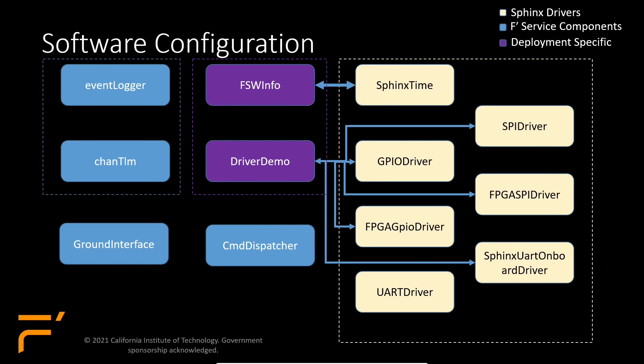Flight Software Info is connected to the Sphinx time driver because it has commands to update time on the Sphinx. Driver Demo is connected to the Sphinx drivers. Flight Software Info and Driver Demo generate both events and telemetry, which get passed to the event logger and channel telemetry components respectively. These components relay data to the ground interface, which transmits to the GDS via UART driver. We can also send commands via GDS — commands go through the UART driver to the ground interface, then to the command dispatcher, which dispatches the command to the appropriate component.